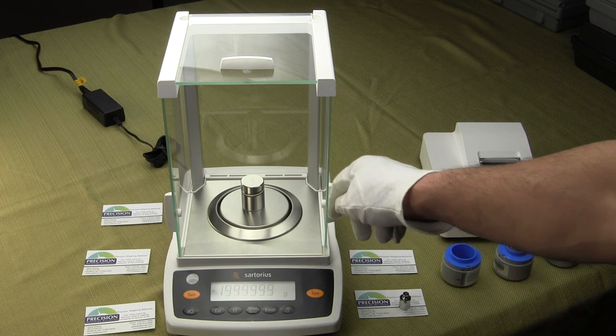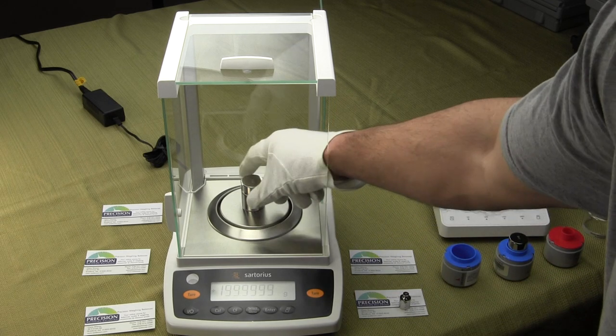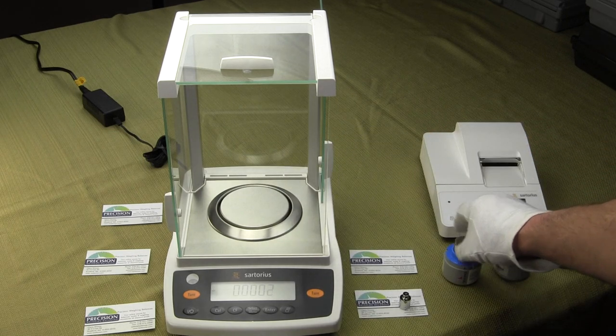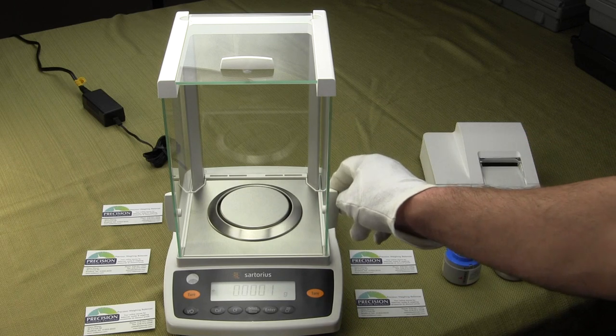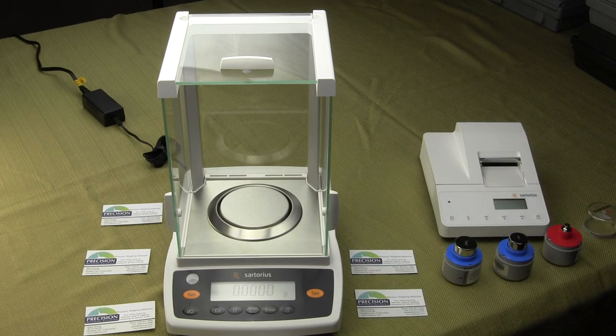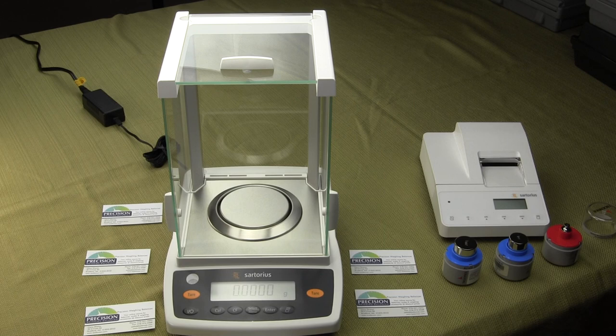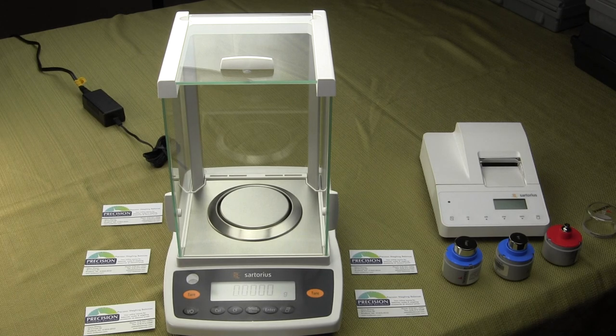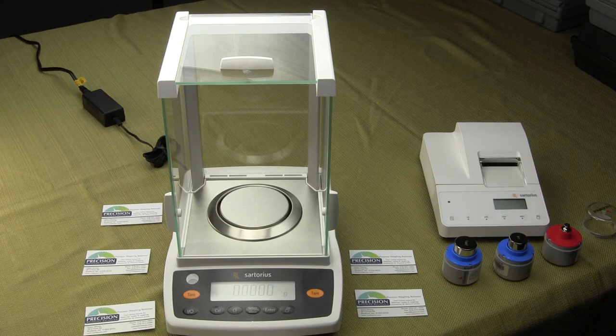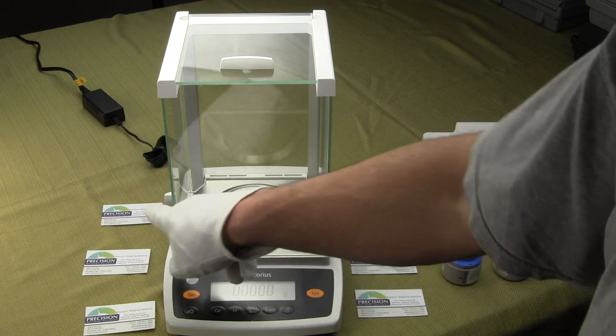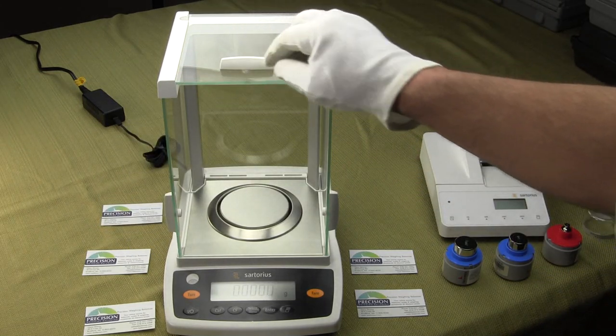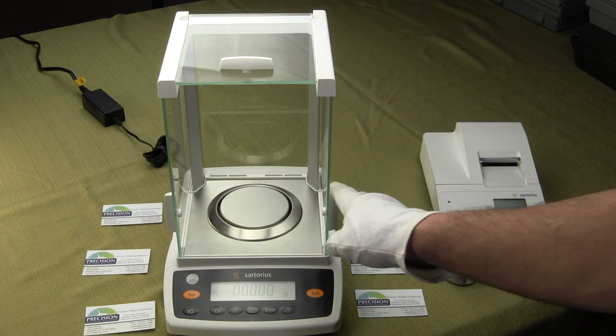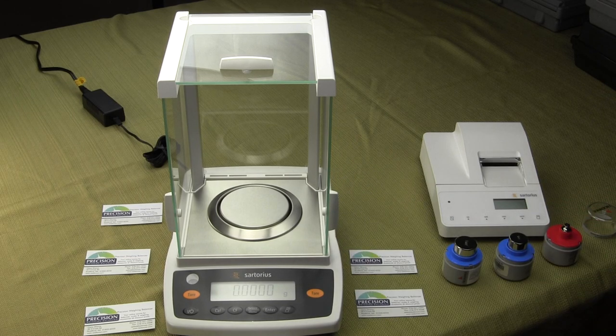This is the Entris series, Sartorius' basic series. You do have plenty of advanced weighing applications like parts counting, percent mode, even density determination. You have a three-door glass draft shield with this balance. The balance can be opened from either the right, left, or the top. The glass draft shield is not removable, it's permanently affixed.